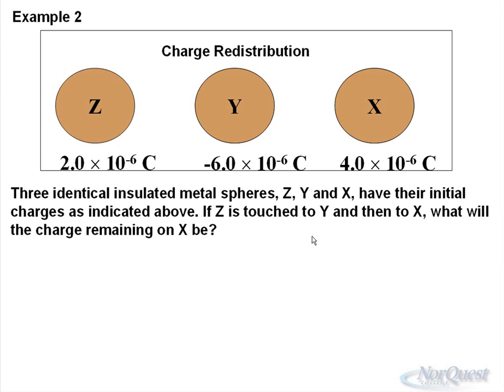Here we have again three identical insulated spheres, Z, Y, and X. It's nice to say that they're metal. What they're saying by insulated is to ensure that charge just doesn't spontaneously decrease. They're insulated, so whatever's in it stays with it until we're contacted. They have their initial charges as indicated above. If Z is touched to Y, then to X, what will the remaining charge on X be?